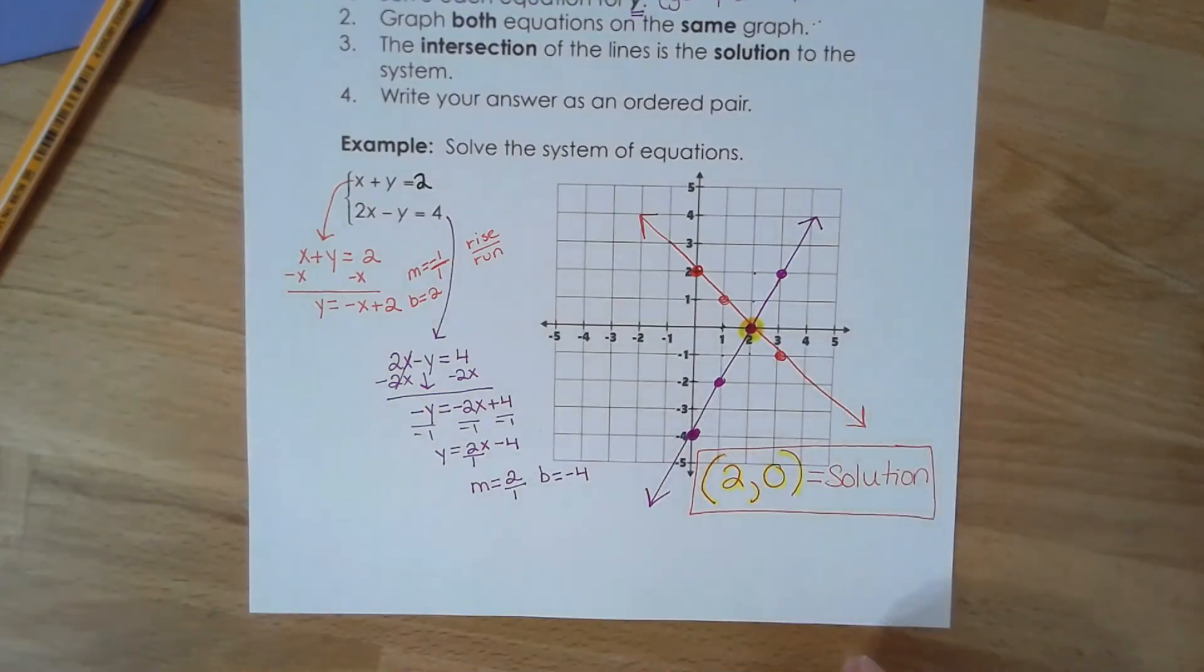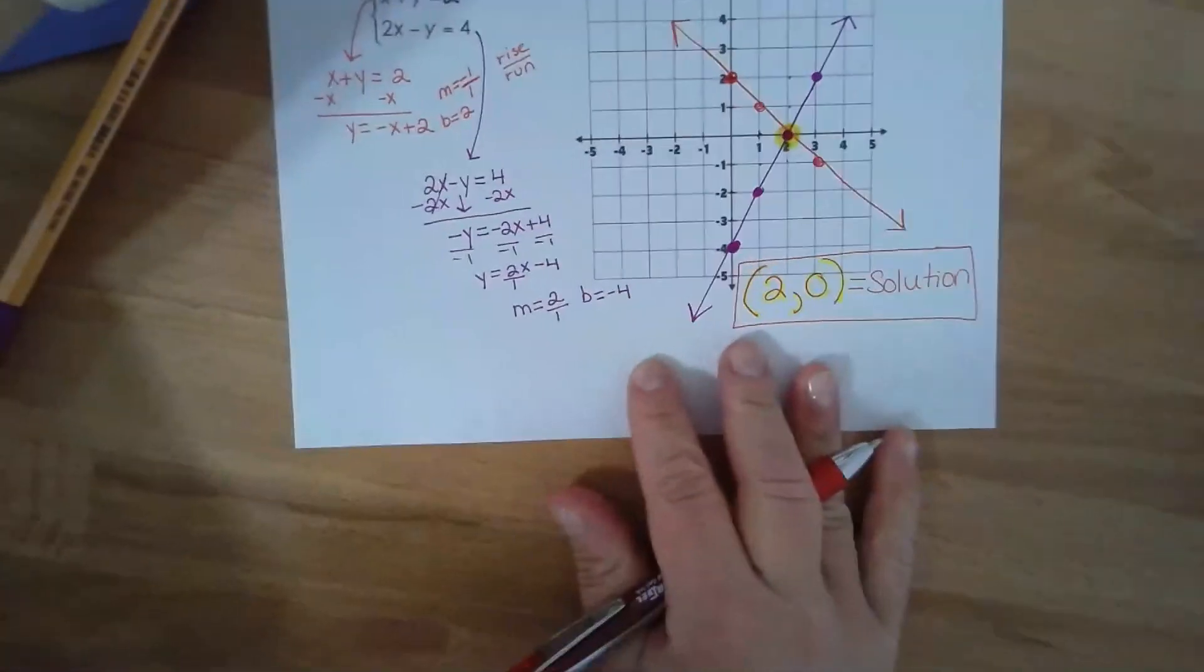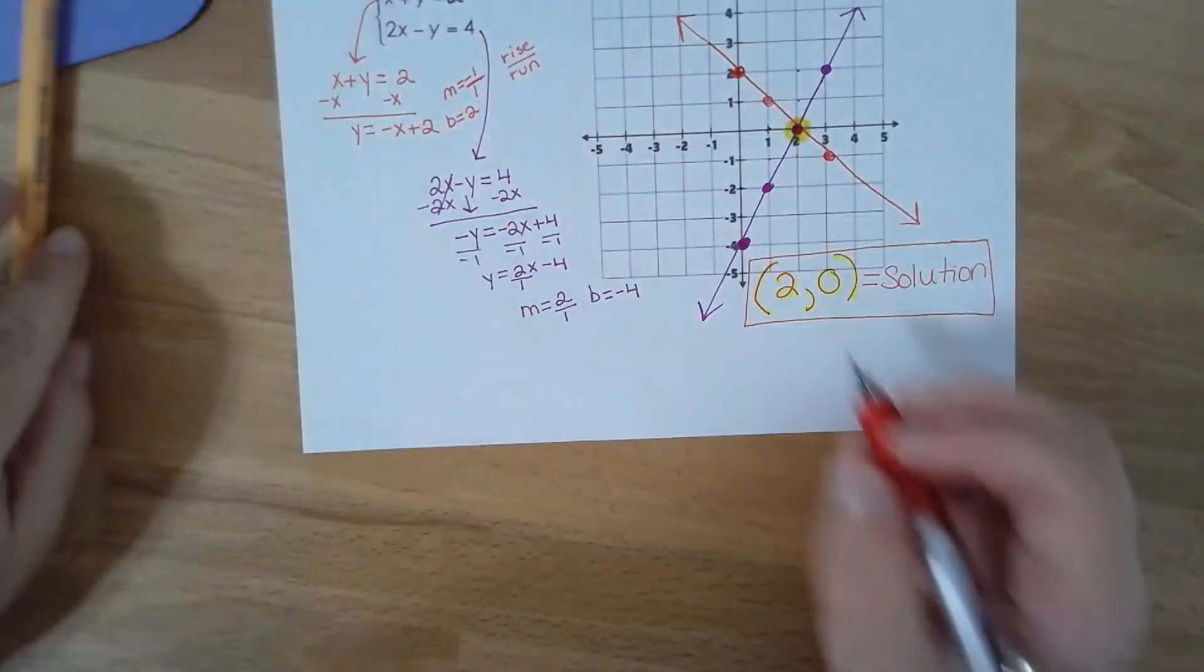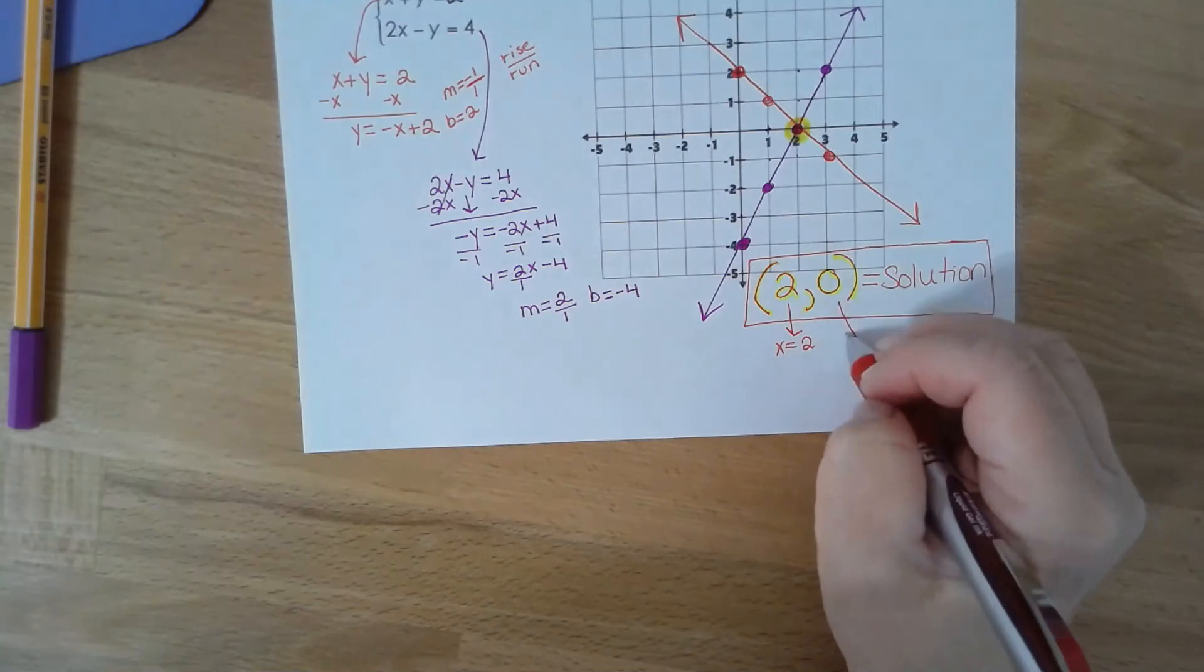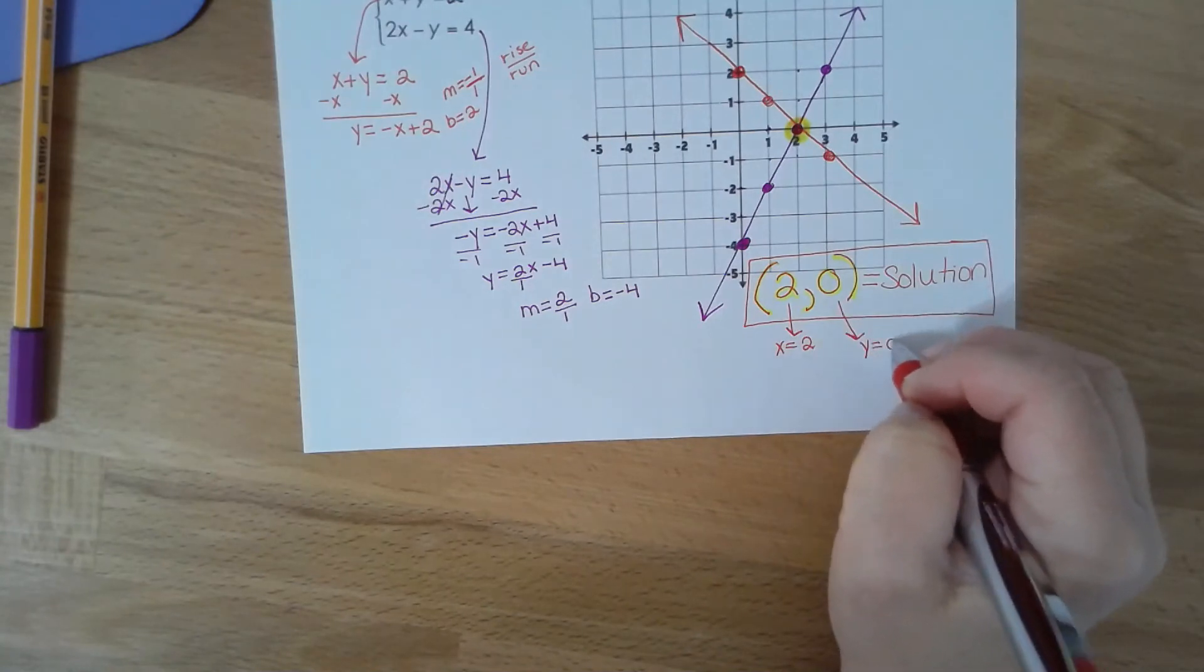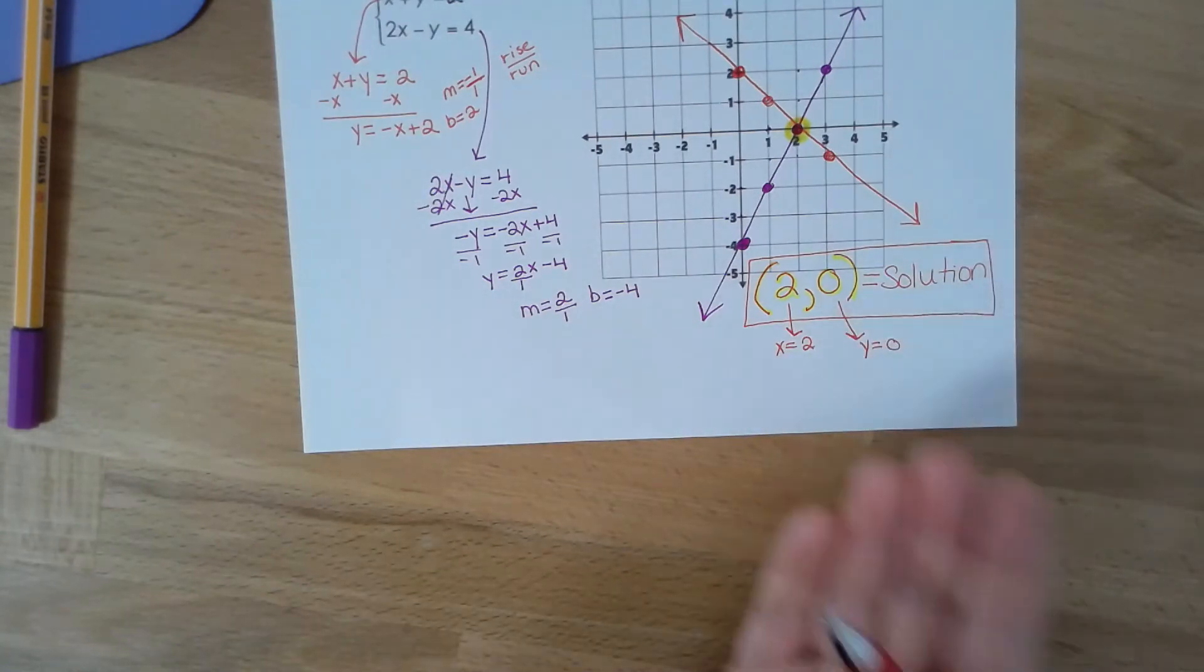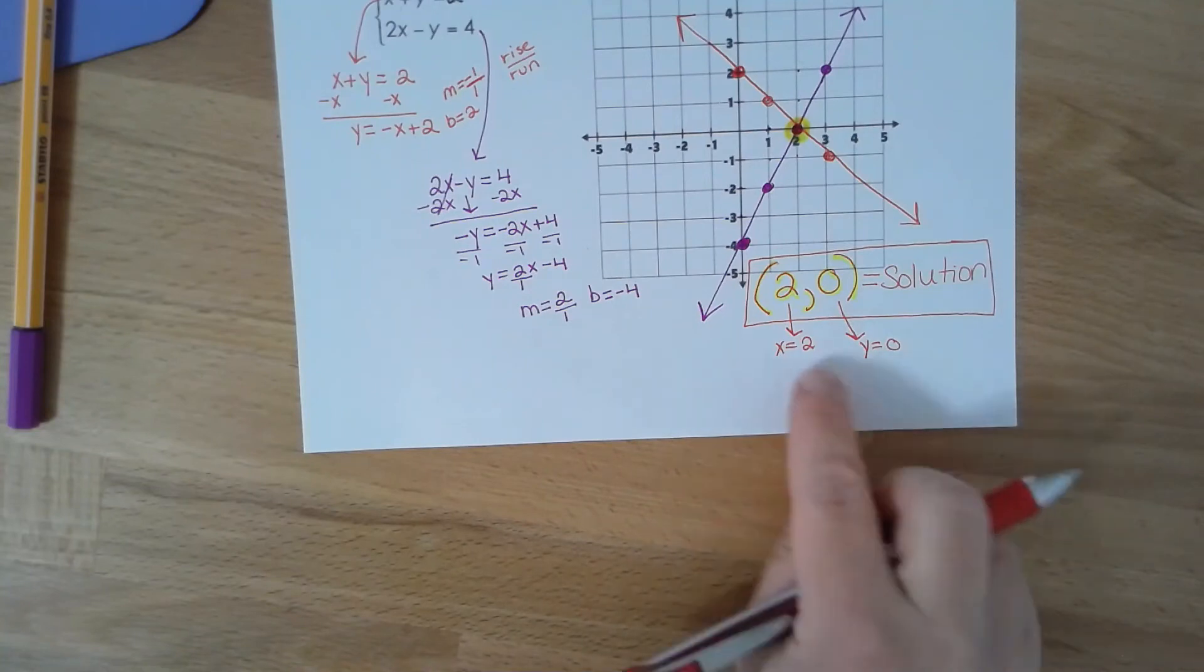Okay, now why is that the solution? You should all agree x is two and y is zero. You don't have to do this for every problem, I'm just showing you what this solution represents.